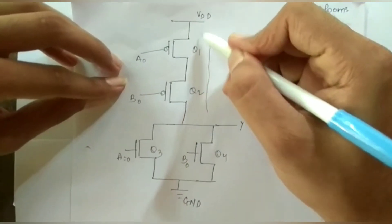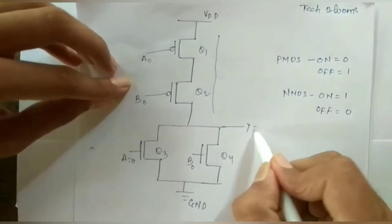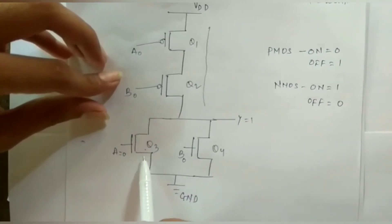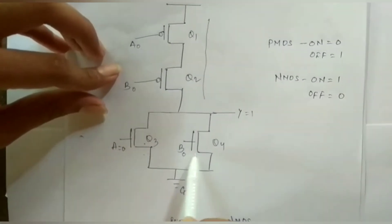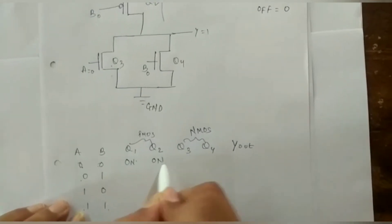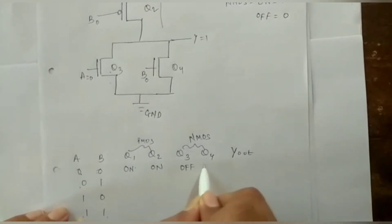So it is VDD from the supply and the output is going to be 1. Both will be OFF since NMOS is OFF for 0. So both will be ON and both will be OFF.